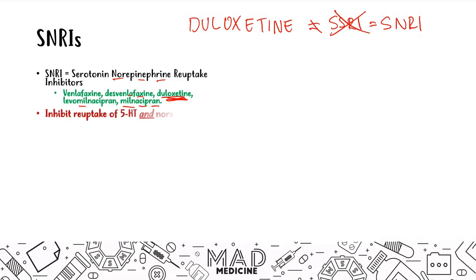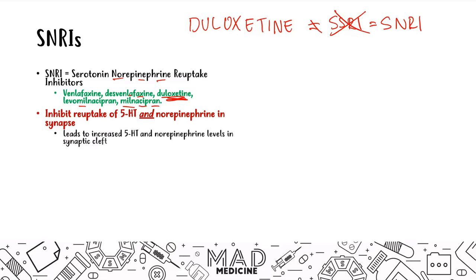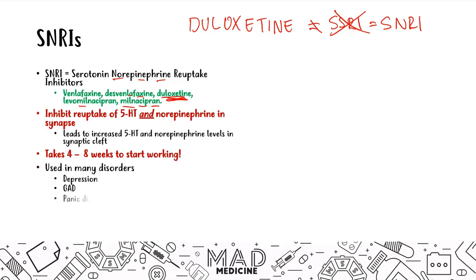SNRIs inhibit the reuptake of both serotonin and norepinephrine, leading to increased levels of both in the synaptic cleft. This also takes four to eight weeks — both SSRIs and SNRIs have the same onset of function. SNRIs are also used in many of the same disorders as SSRIs, so you can kind of use them interchangeably.